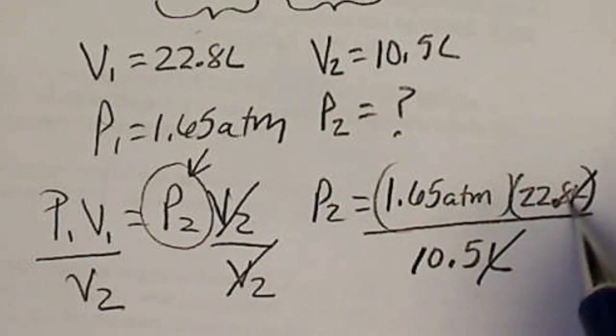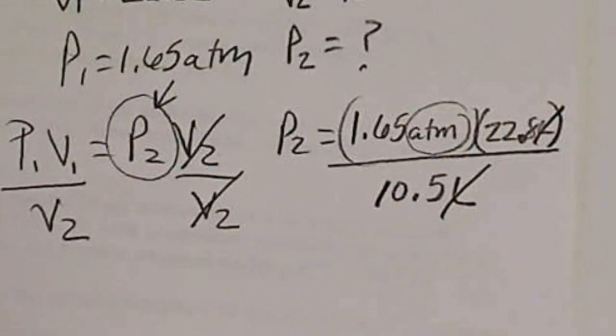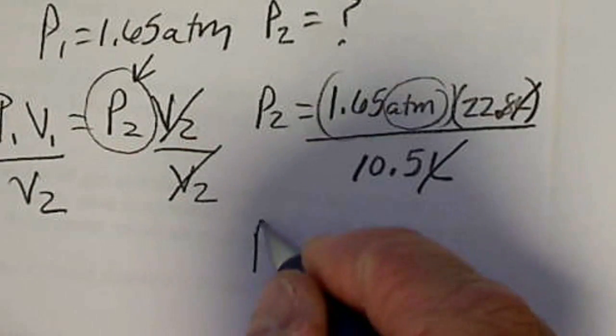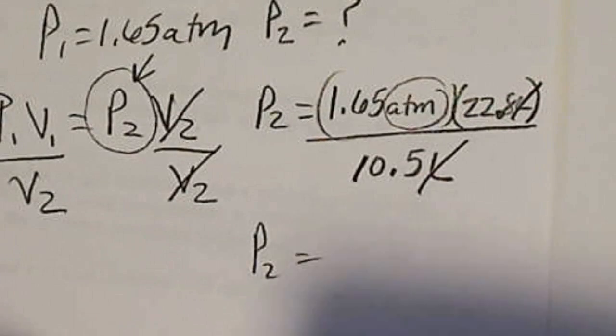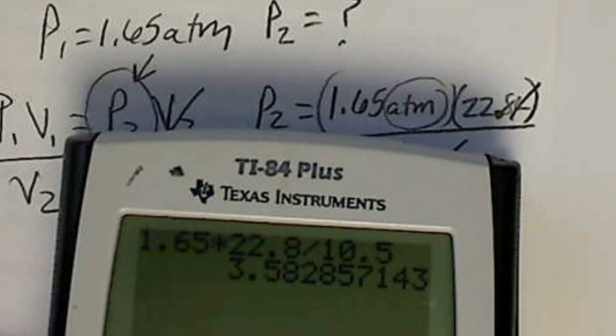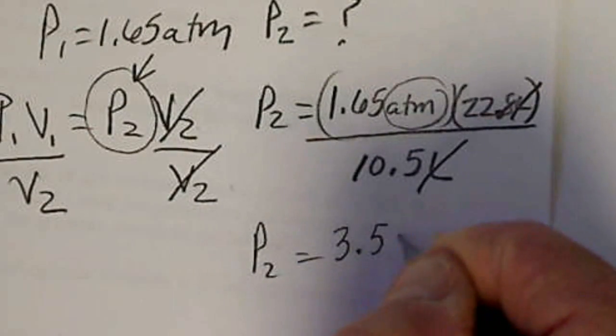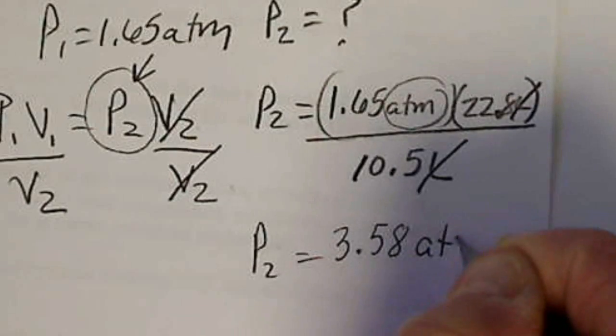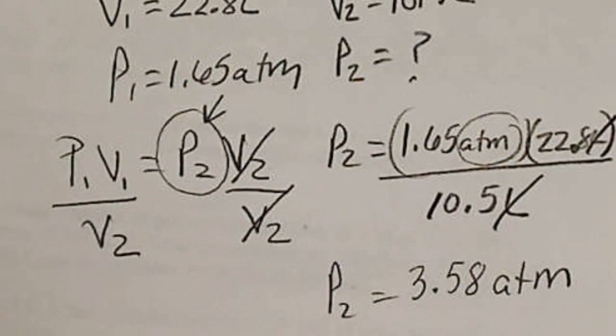And our units are going to cancel. The atmosphere unit is the only unit that does not cancel. So when we do that math, P2 is 1.65 times 22.8 divided by 10.5. So when I do that calculation, I get 3.58. We'll round that. 3.58. And the unit would be atmospheres.